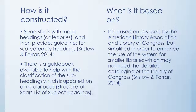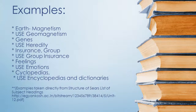Sears starts out with major headings or categories that it provides to users, and then it provides guidelines for subcategory headings. It also provides a guidebook that is available to help with the classification of subheadings and is updated on a regular basis. All of this is based on lists used by the American Library Association and the Library of Congress, but simplified to enhance use for smaller libraries, which may not need the detailed cataloging of the Library of Congress.